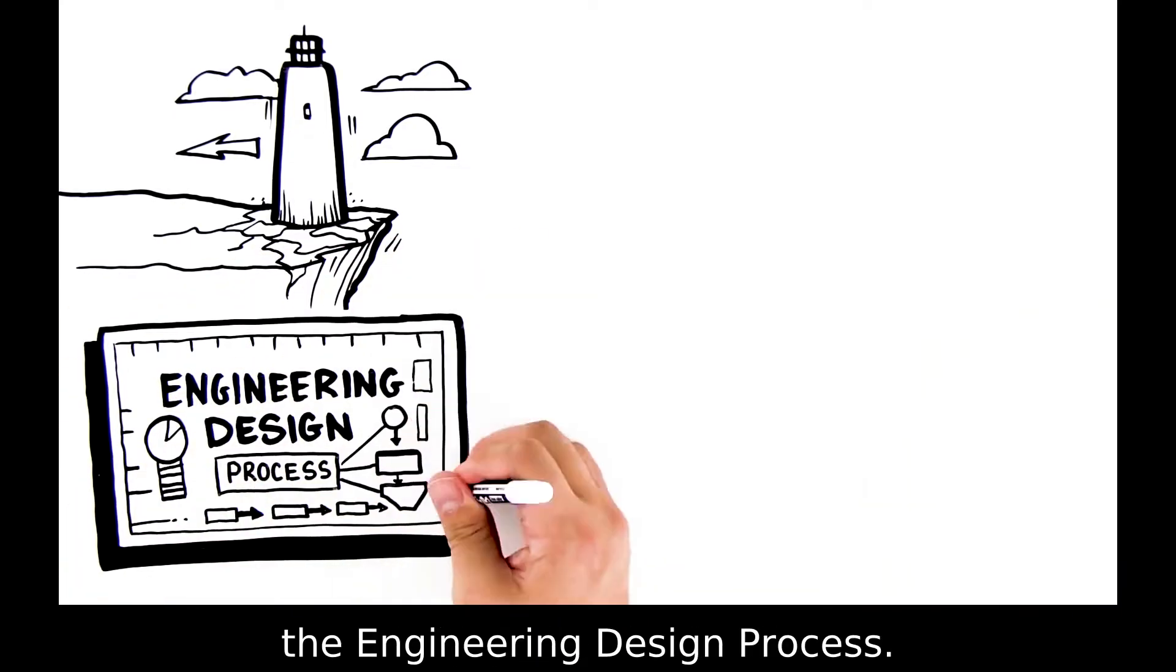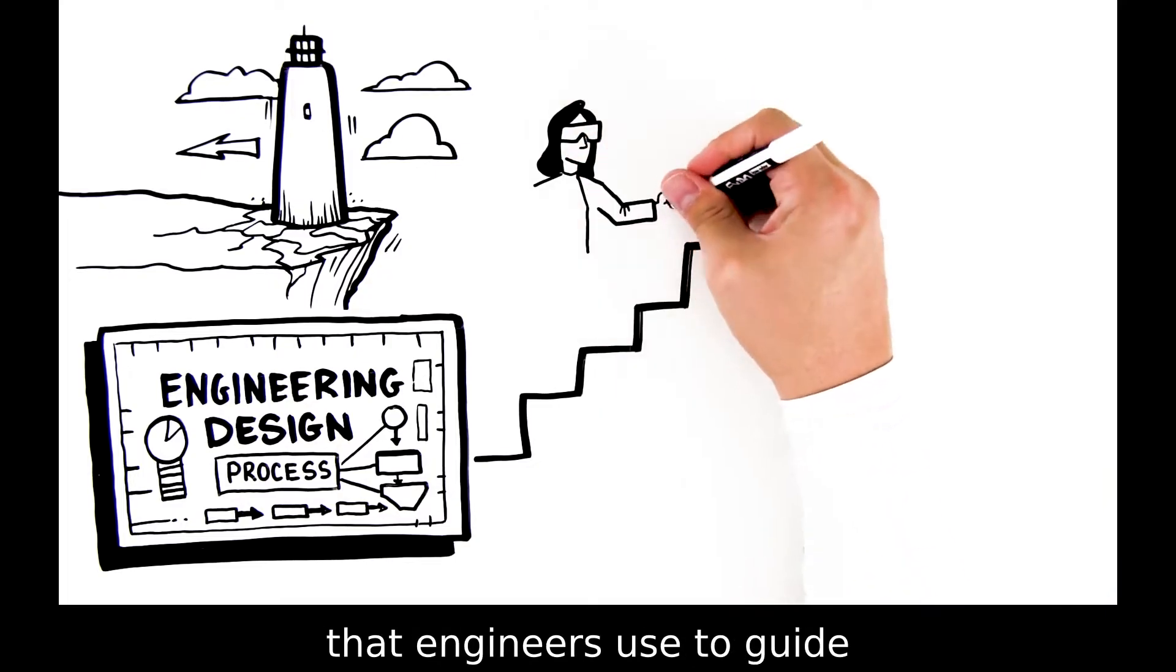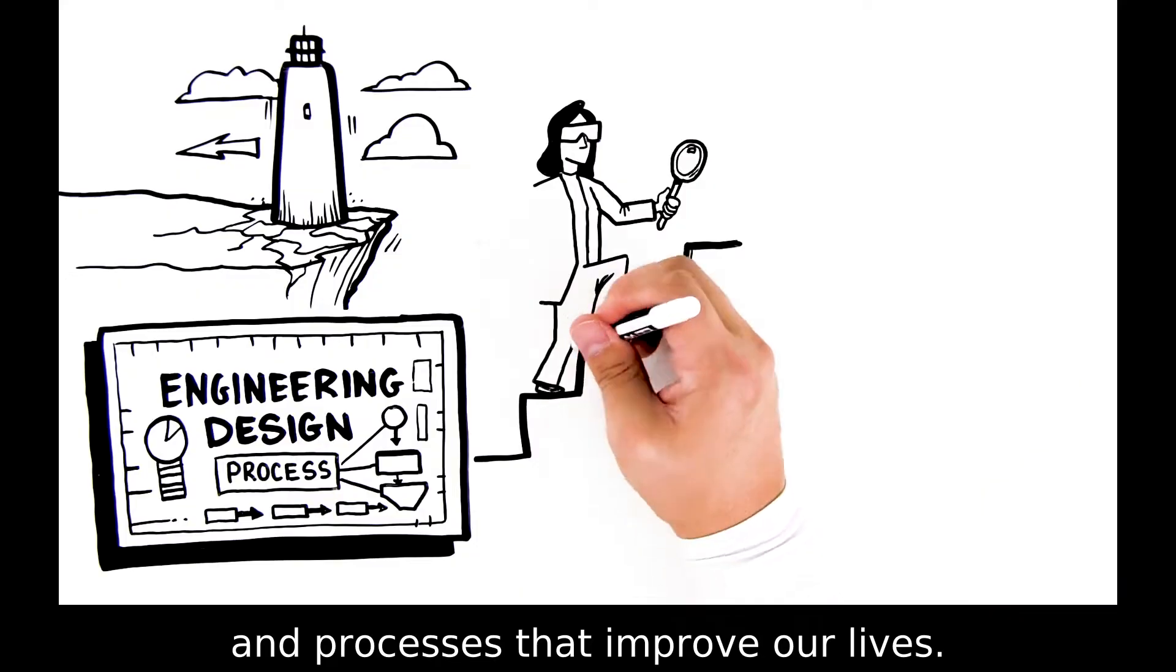The Engineering Design Process is a series of steps that engineers use to guide the development of products and processes that improve our lives.